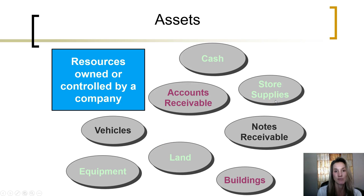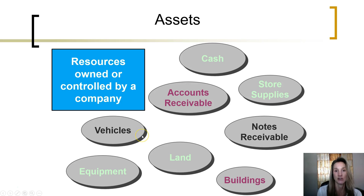Store supplies are assets that the company will use to help it operate. Notes receivable are similar to accounts receivable, except notes receivable have an underlying promissory note stating that whoever owes the amounts will not only pay the amount owed, but will also pay a rate of interest. Vehicles, equipment, land, and building are all assets or resources owned by the company used to help it operate.